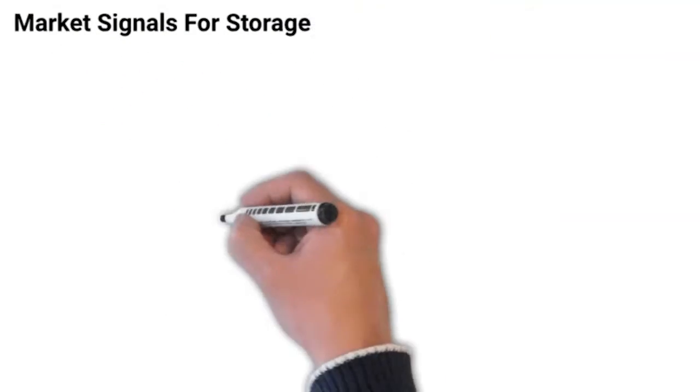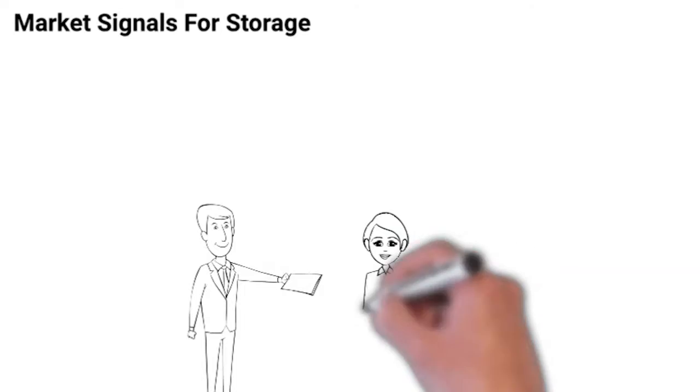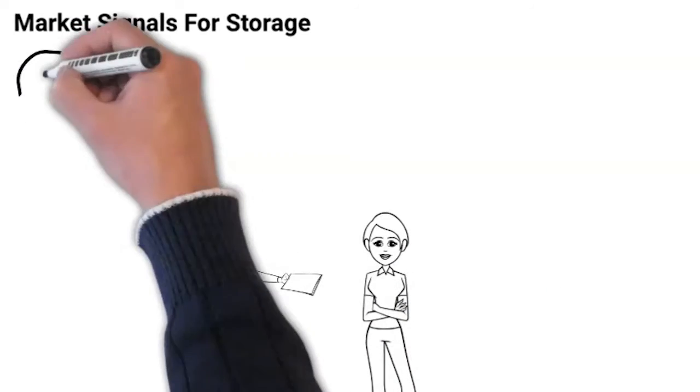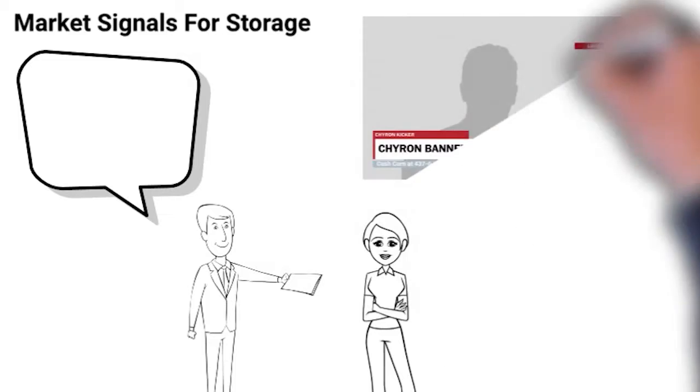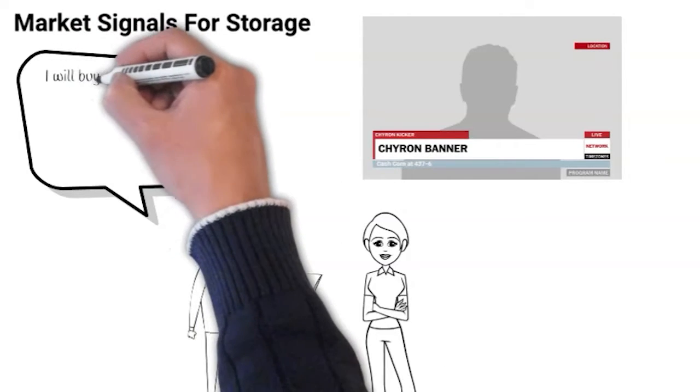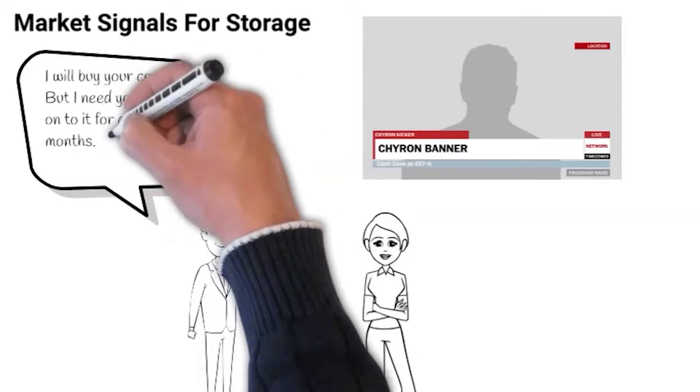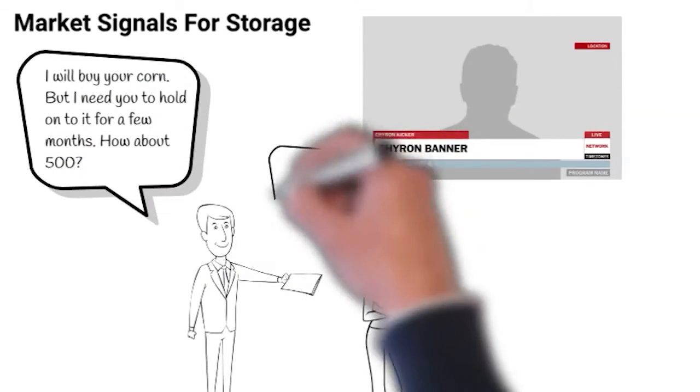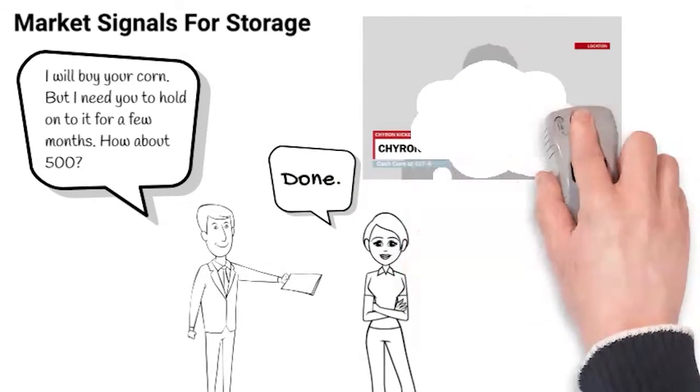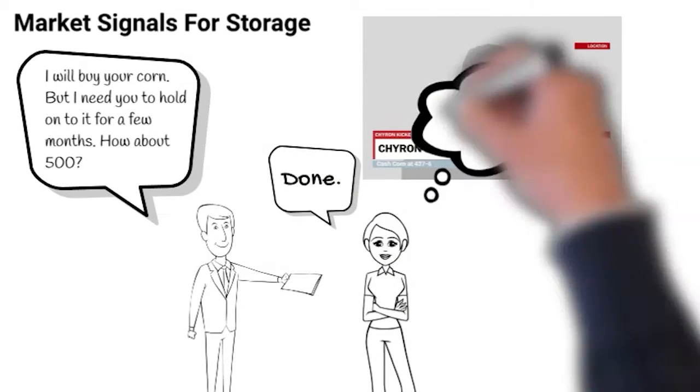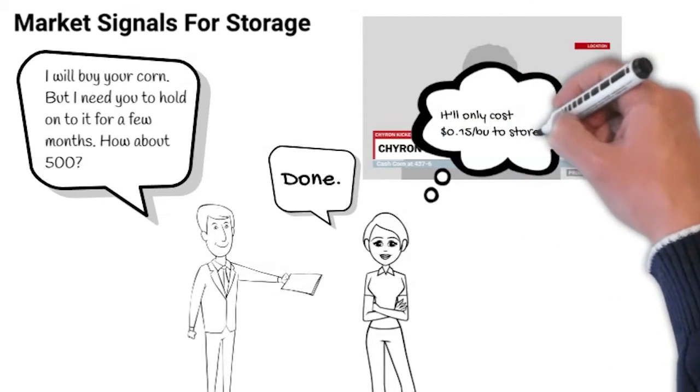The market sends signals to encourage or disincentivize storage. So imagine corn is trading for $4.37 a bushel, and someone comes to you and says, I will buy your corn, but I need you to hold on to it for a few months. How about $5? Well, done. Especially if it only costs 15 cents a bushel to store.